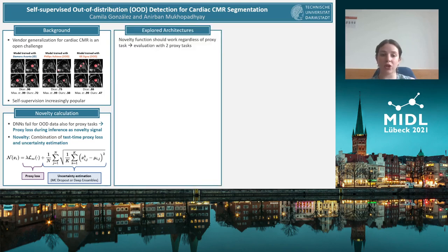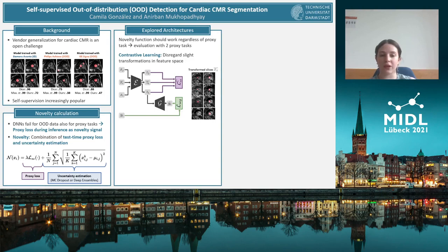Ideally, this novelty function would work for any self-supervised model. In our work, we evaluated on two architectures. The first has a contrastive learning proxy task. What this does is reduce the distance in feature space between an image and a slightly transformed version of the same image, as you can see in the examples on the right. At the same time, it increases the distance between the image and a second different image to ensure that sufficient geometric information is recorded in the features.